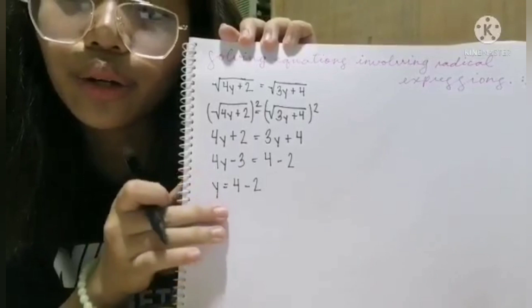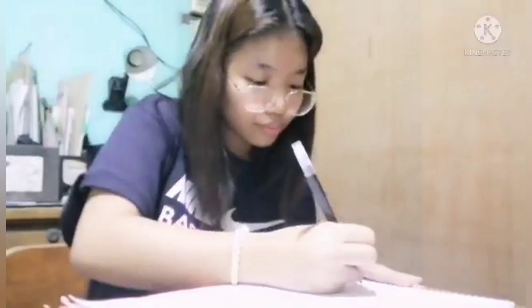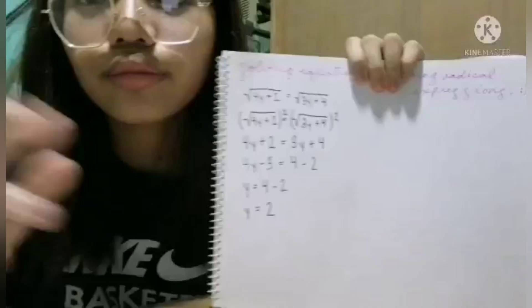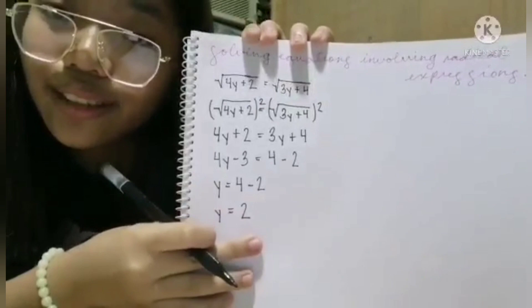Next, we're going to have to subtract 4 minus 2. Now that we subtract 4 minus 2, this is the answer. And it will be the final answer.